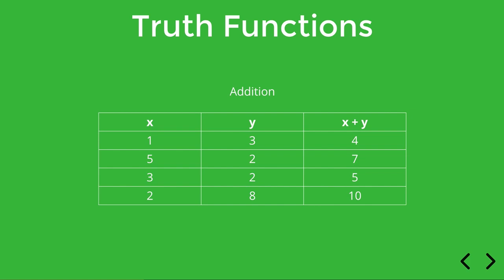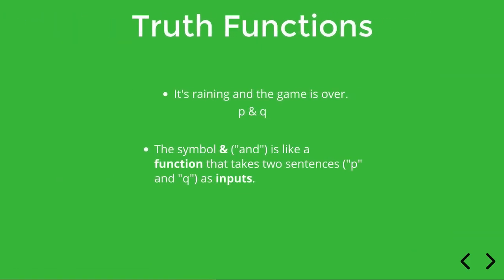Okay, so what does this all have to do with logic? Well, consider a simple sentence containing a conjunction, for instance: 'It's raining and the game is over.' In logic we might represent this as P ampersand Q. So what you notice is that the ampersand, the AND symbol, combines P and Q, and in that sense it's kind of like a function that takes P and Q, which stand in for sentences, as inputs.